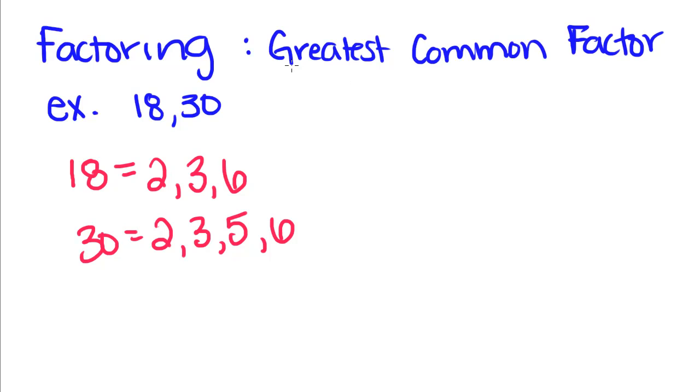When we find the greatest common factor, we're finding the largest number that we can pull out of both of these and it has to be the same number. They both share a 2 in common, but that's not the greatest common factor. They both share a 3, but that's not the greatest common factor either. But they both share a 6, and since that is the largest number that they are both evenly divisible by, 6 is our greatest common factor.